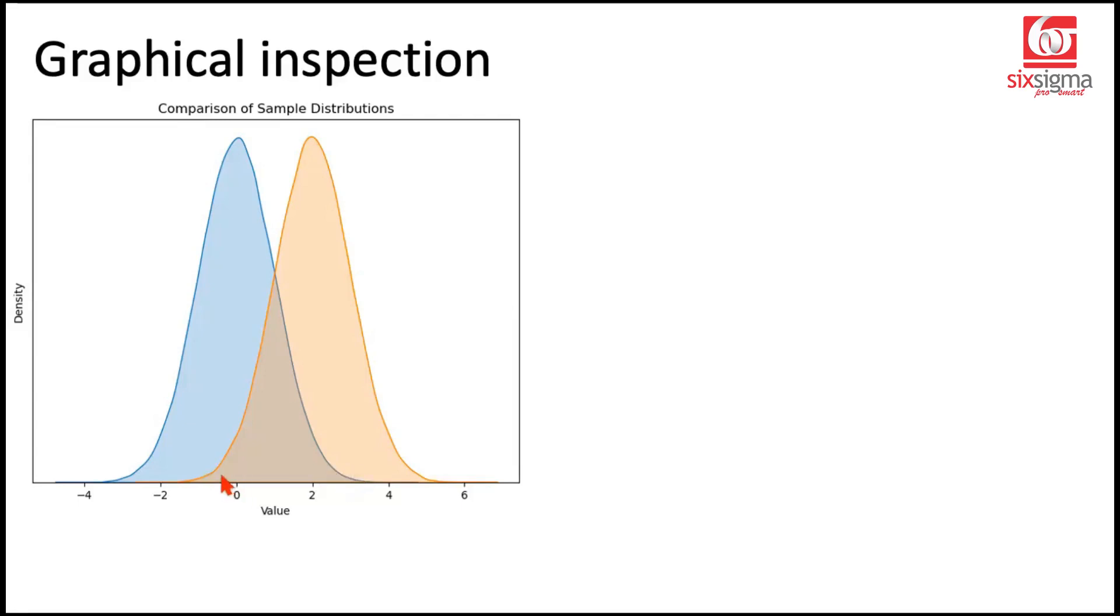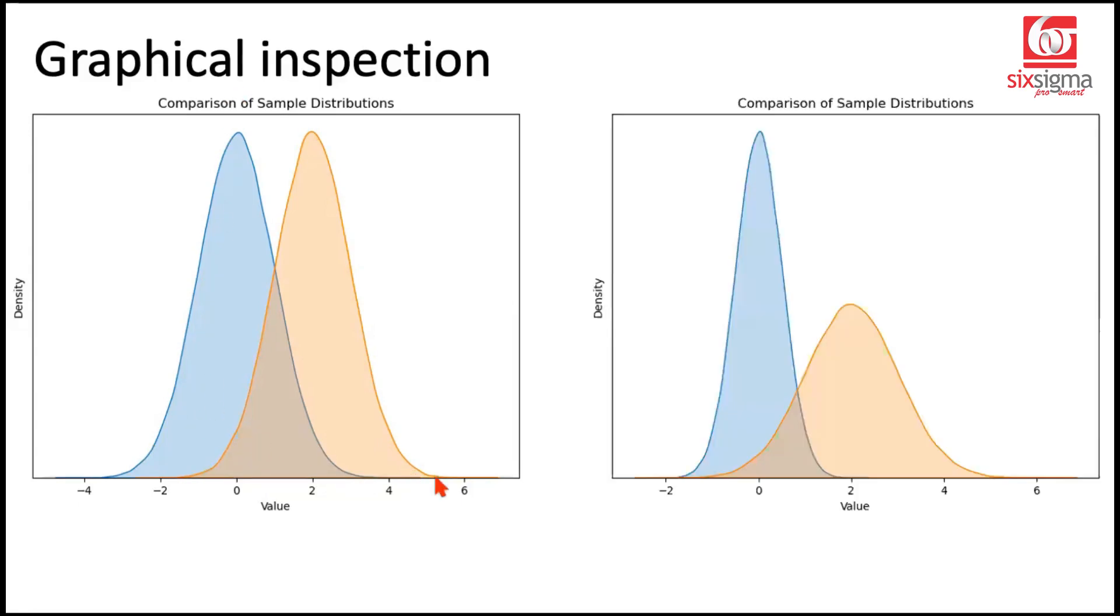Now on purpose, what we have done is we have reduced the variance of the first distribution. When we reduce the variance, what happens is these points should come closer and the curve would look a little steeper. I'm talking about something like this. So what has happened? In this case, you can see the variance has reduced in case of this blue distribution. Of course, it looks different to you compared to the previous one because the scale has changed.